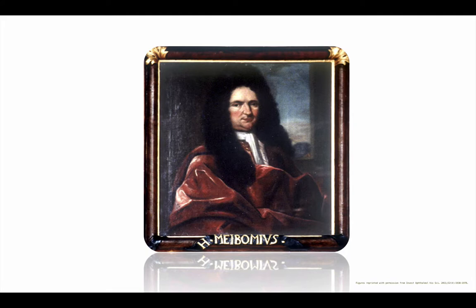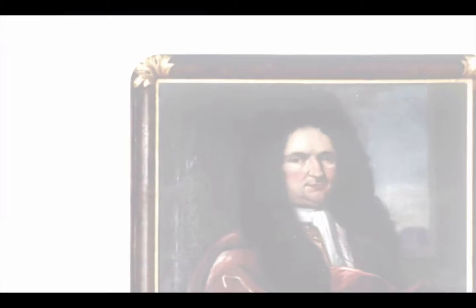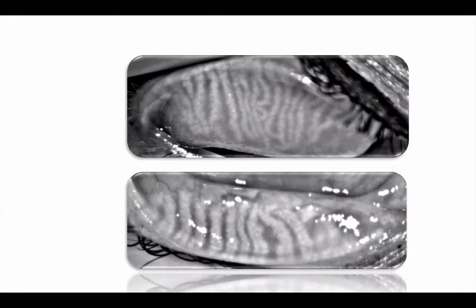Meibomian glands were first described by Henrik Meibom the Younger in 1666. There are some 30 glands in the upper lid and about 26 on the lower.